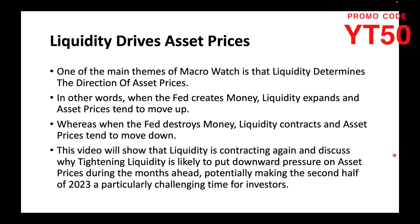One of the main themes of Macro Watch is that liquidity determines the direction of asset prices. In other words, when the Fed creates money, liquidity expands and asset prices tend to move up. Whereas when the Fed destroys money, liquidity contracts and asset prices tend to move down.